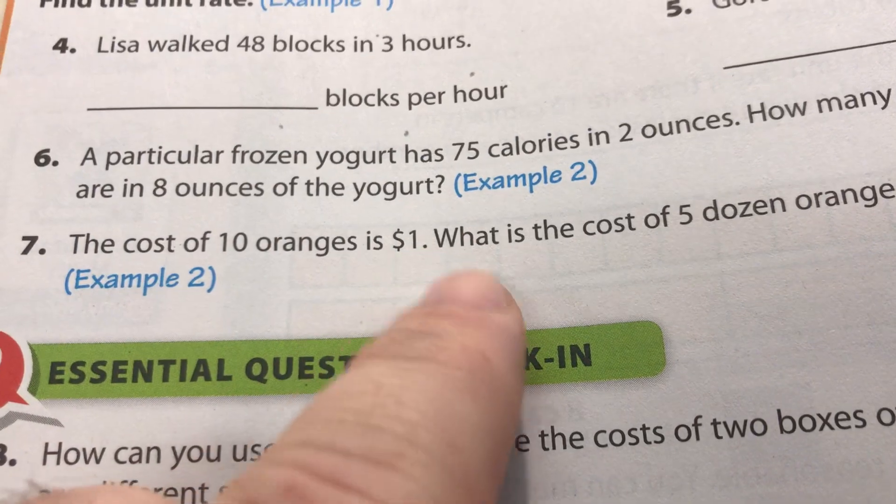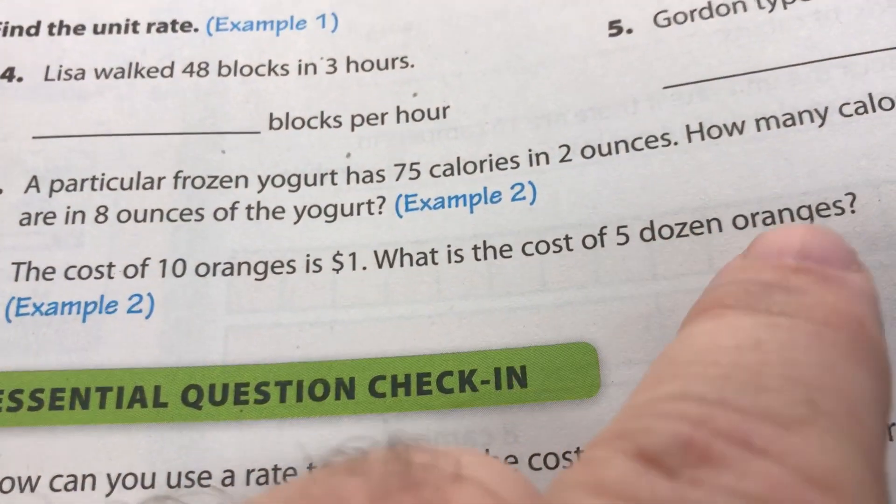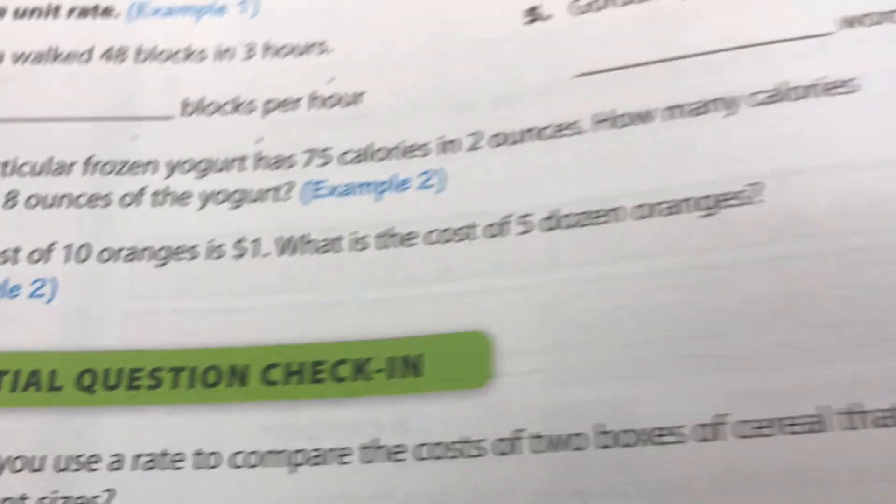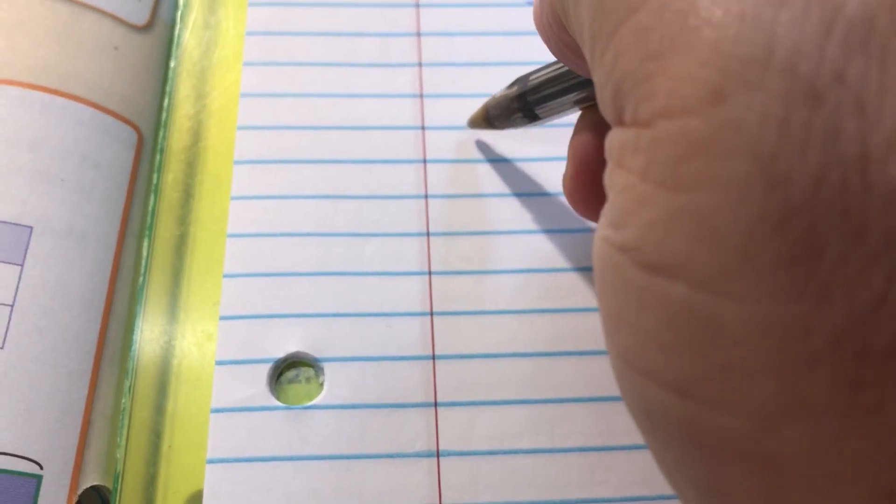The cost of 10 oranges is $1. What is the cost of 5 dozen oranges? Well, when we start making our ratio for this, we want to make a unit rate for 10 oranges. We've got 10 oranges.